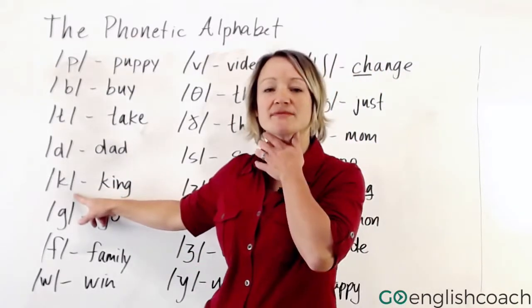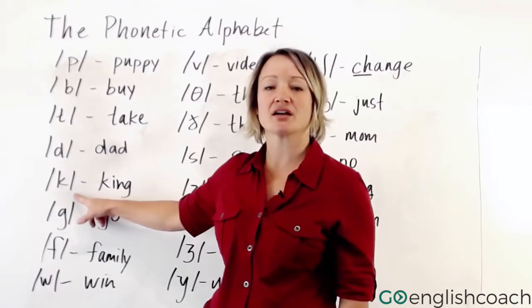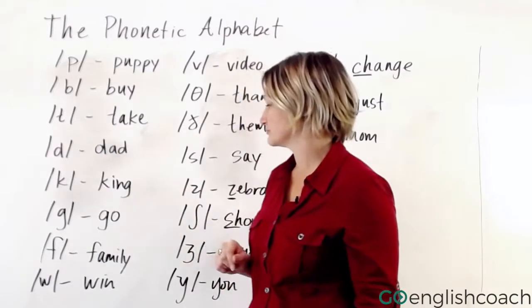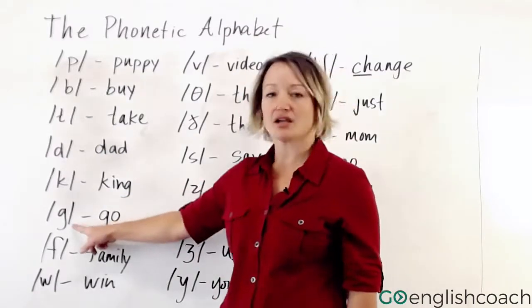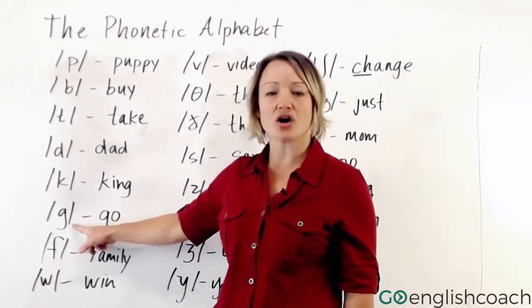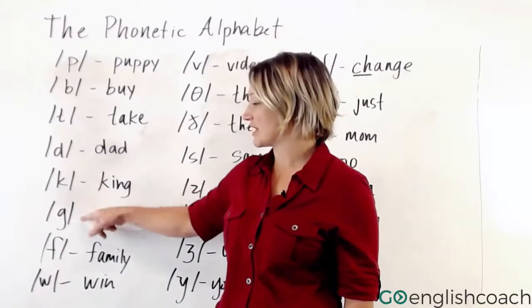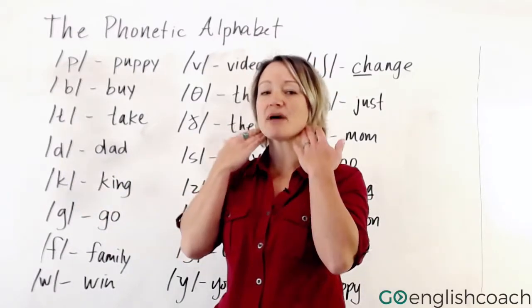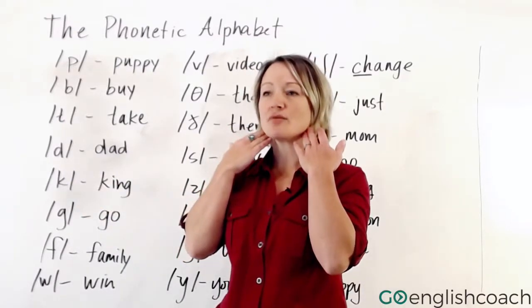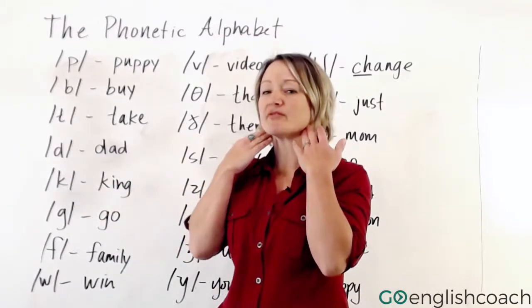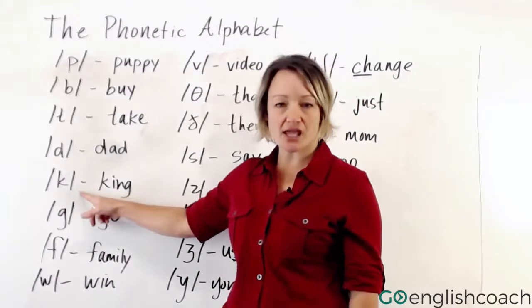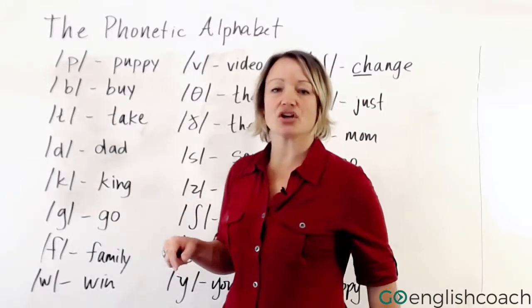Kuh — this one comes from back here. Kuh. King. Guh. Go. These two actually come from the same place, kind of in the back of your mouth at the top of your throat. King and go.